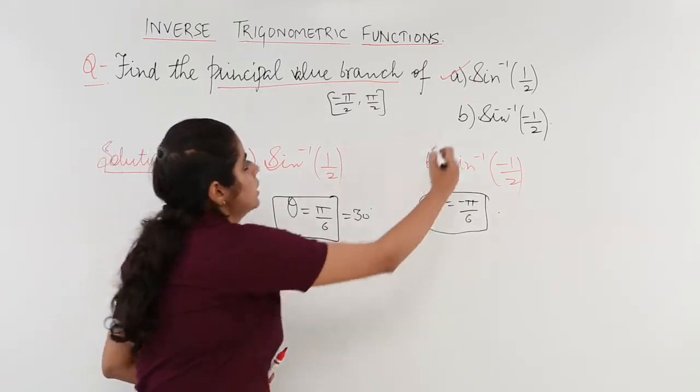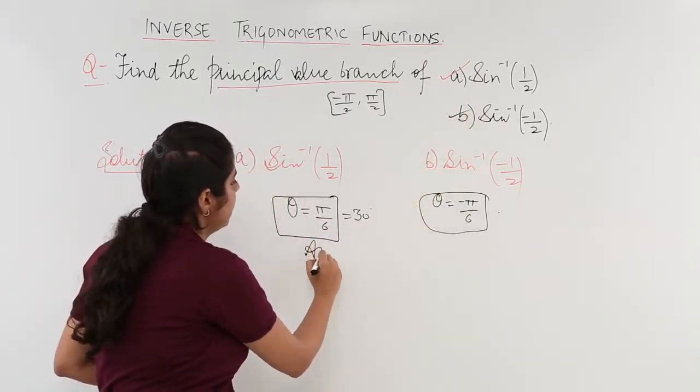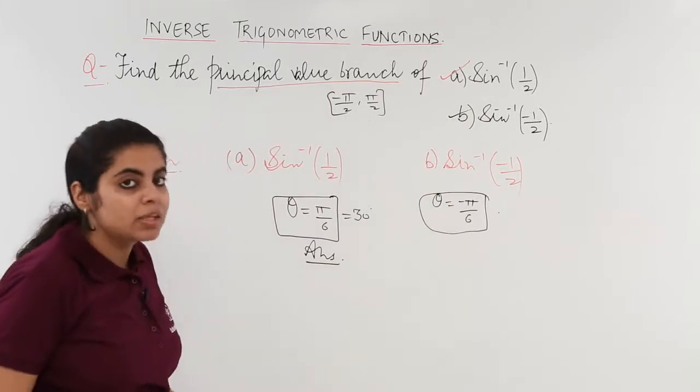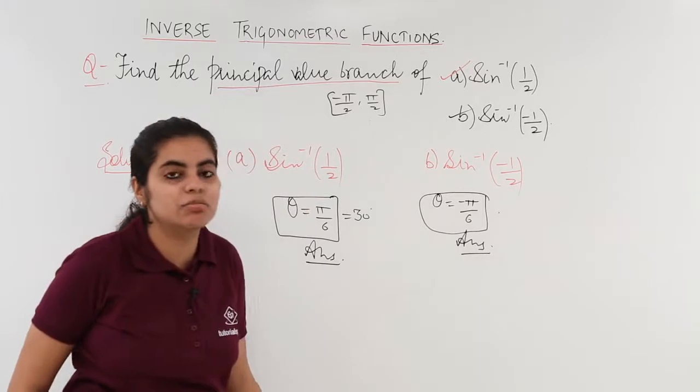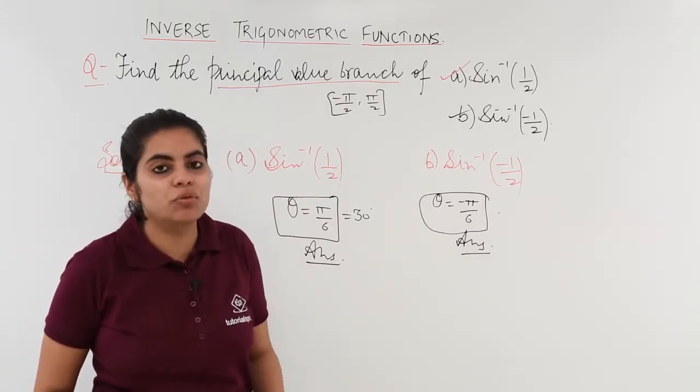So, the first answer of sine inverse 1 by 2 is pi by 6. And the second answer of sine inverse minus 1 by 2 is minus pi by 6.